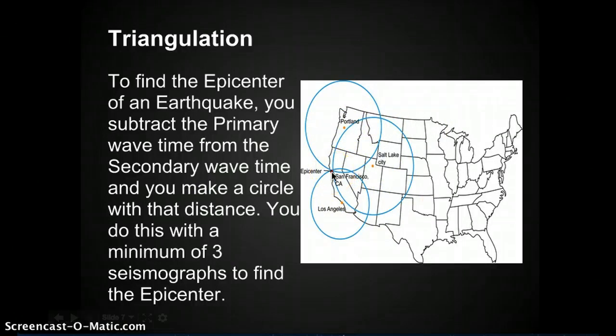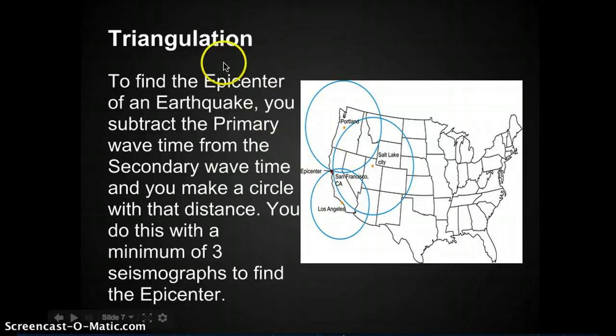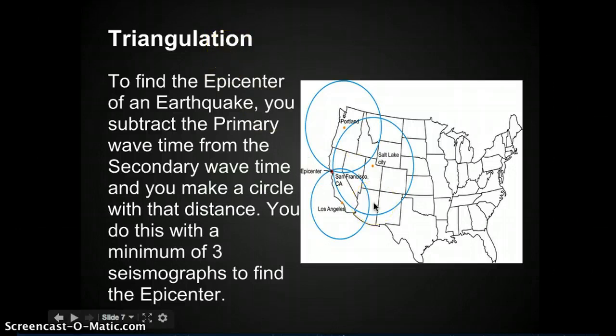So remember, to find the epicenter, you use triangulation. You subtract the primary wave speed from the secondary wave speed.